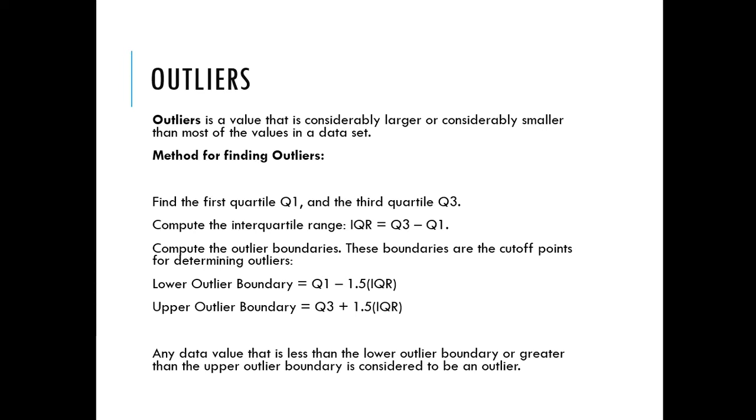What you do then is to get the lower outlier boundaries, you do Q1, which you've already gotten from the calculator, minus 1.5 times your IQR. 1.5 is just a standard given. So once you do that, you'll get a lower outlier boundary.